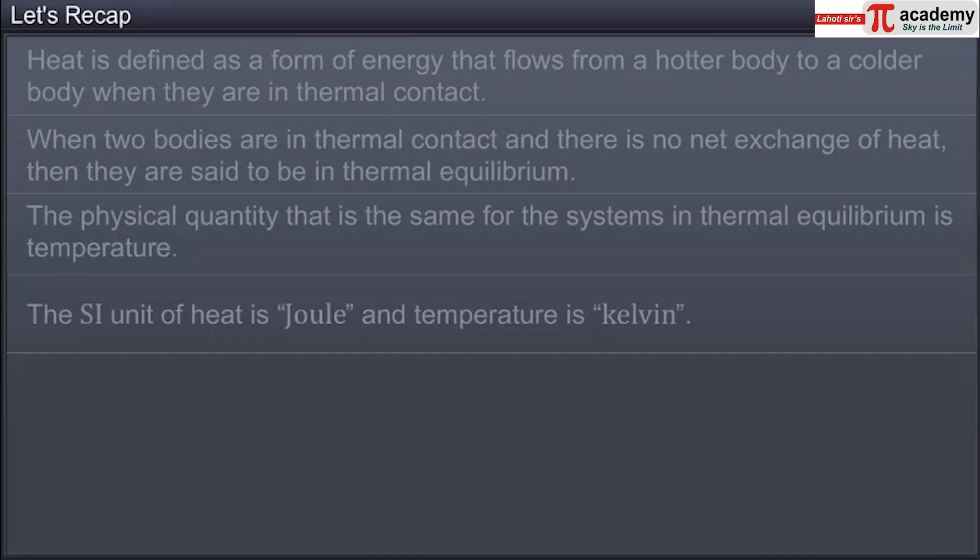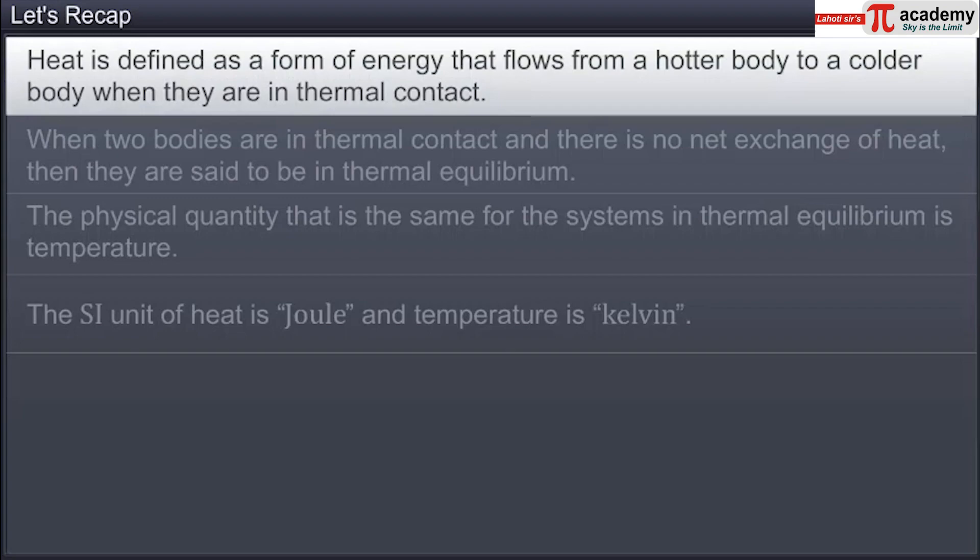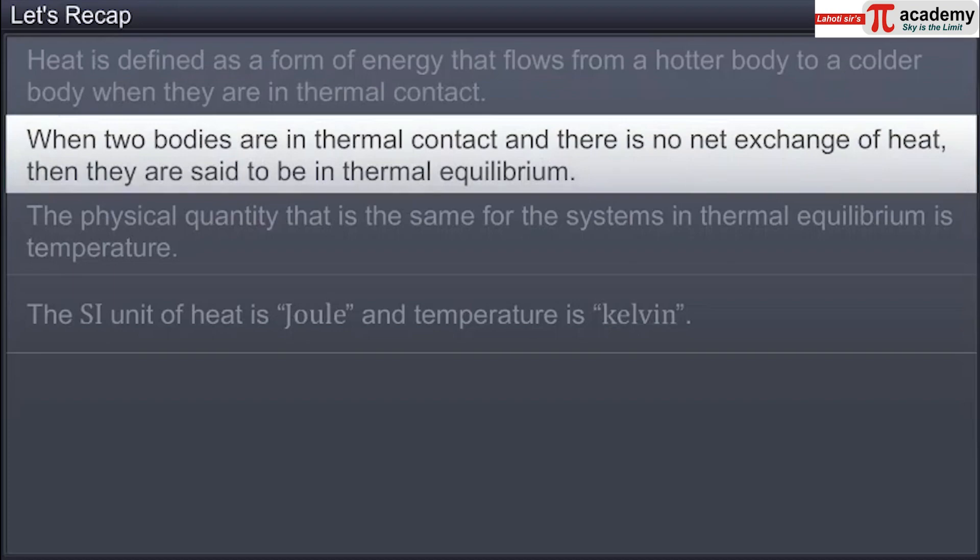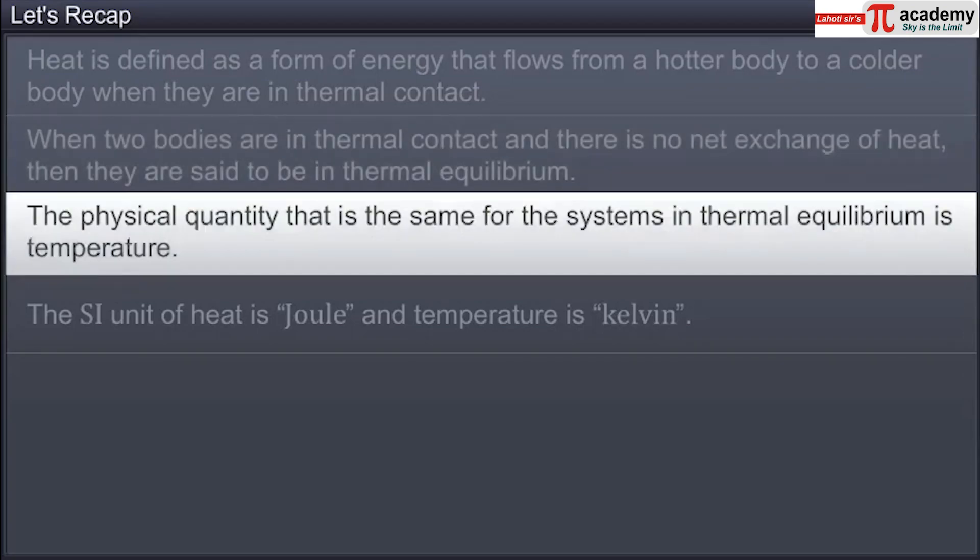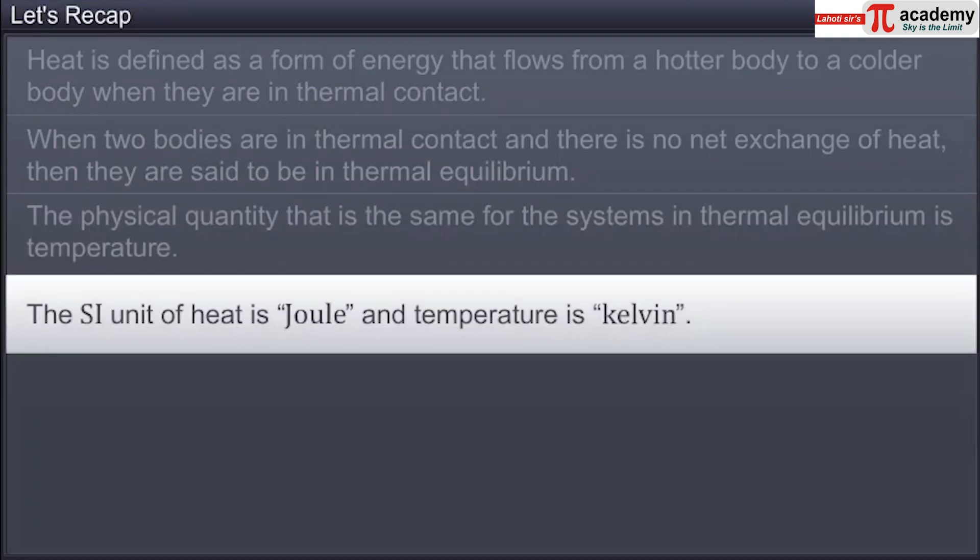You have now reached the end of this module. Heat is defined as a form of energy that flows from a hotter body to a colder body when they are in thermal contact. When two bodies are in thermal contact and there is no net exchange of heat, then they are said to be in thermal equilibrium. The physical quantity that is the same for the systems in thermal equilibrium is temperature. The SI unit of heat is Joule and temperature is Kelvin.